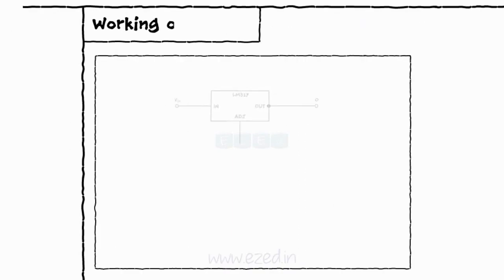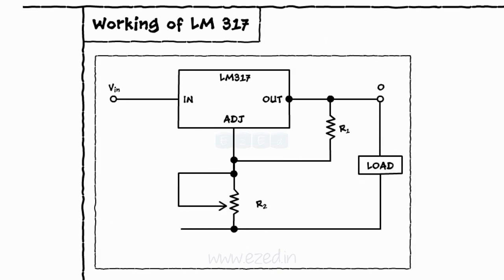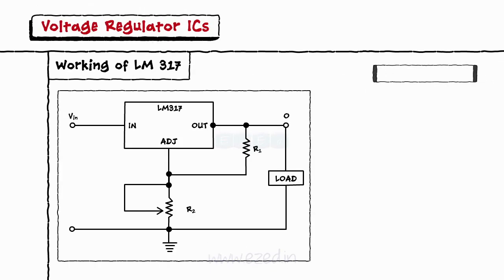The connection diagram of LM317 is as shown below. It requires only two external resistors R1 and R2 to set the required output voltage. Internally, it develops a reference voltage of 1.25 volts between the out and adjust terminals which is denoted as V reference. This voltage is imposed on R1.